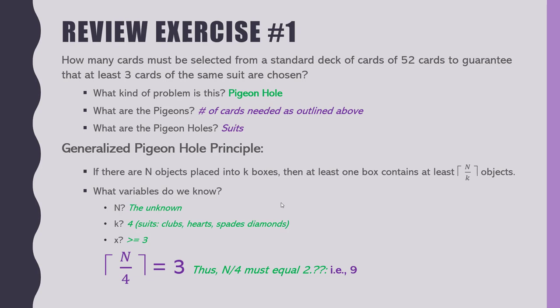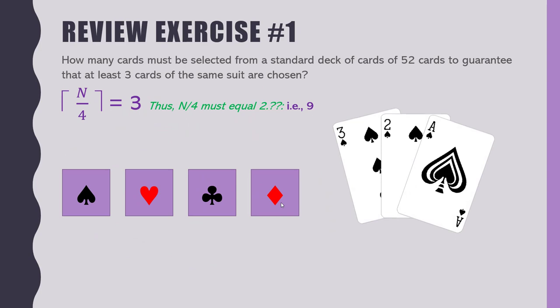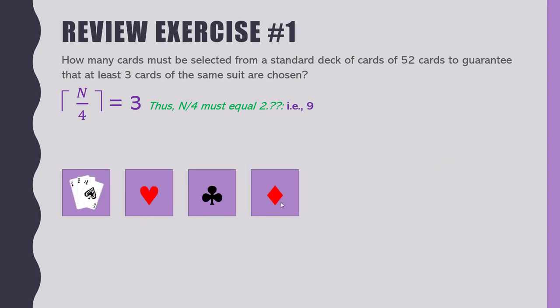The answer is nine. If I tried seven, four goes into seven one-point-something. If I tried eight, it goes in exactly two — exactly two will not ceiling up to three. But nine gives us two-point-something, which will ceiling up to three. That's how we solve it. This is a visual representation: I could get lucky and the first three cards I drew were the same suit — but that's not a guarantee.